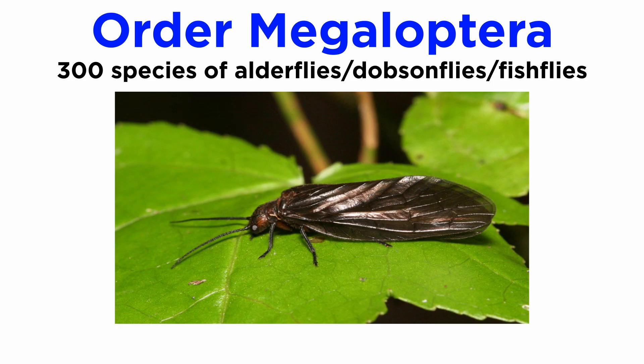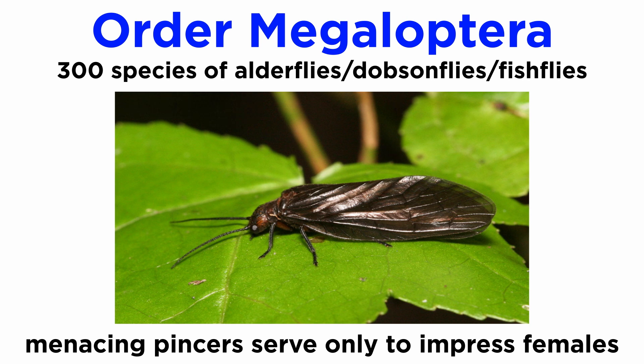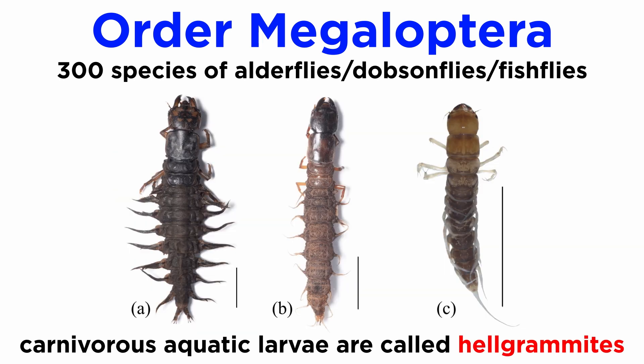Order Megaloptera includes more than 300 described species of alderflies, dobsonflies, and fishflies. They are large insects, and male dobsonflies are often noted for their menacing pincers that are actually harmless and serve primarily to impress females. They all go through a rudimentary form of complete metamorphosis where their carnivorous aquatic larvae, often called hellgrammites, emerge as short-lived winged adults.